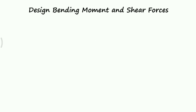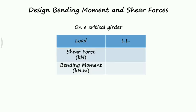The design bending moment and shear force on the critical girder due to live load are: shear force = 427.04 kN and bending moment = 2073.8 kN·m. In this lecture we obtained the live load bending moment and shear force on the critical girder. In the next lecture we will determine the dead load bending moment and shear force on the critical girder. Thank you.